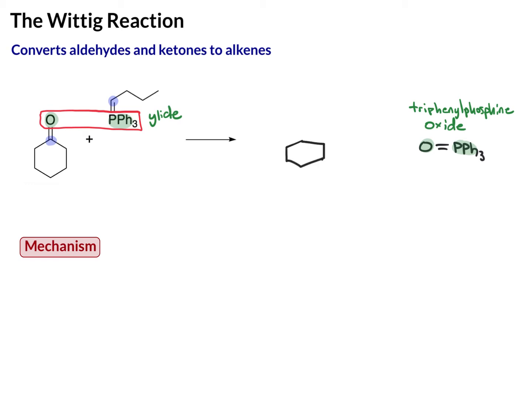Here is the six-membered ring that we have. There's that carbon in blue — that will get a double bond to the ylide carbon, also in blue, and that carbon has a three-carbon chain attached. So there's the product: an alkene. This is an easy way to predict the product of the reaction.